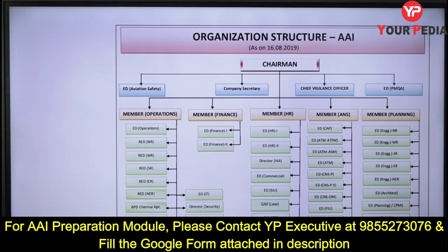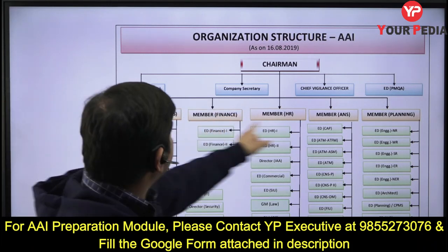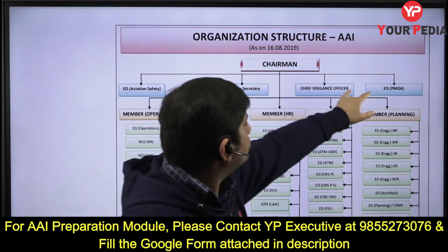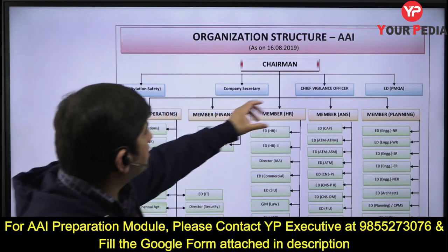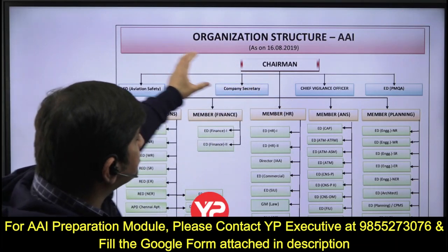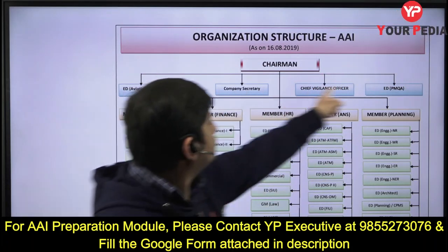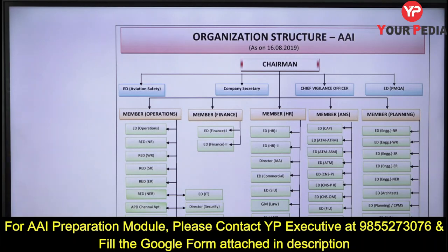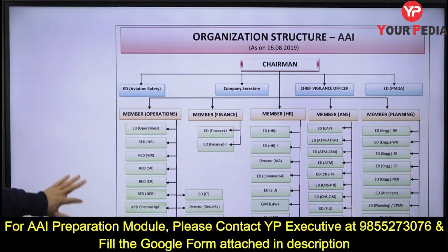Then there are Members, and you can see from the hierarchy arrows that Members are directly under Chairman. These posts are also under Chairman, but you cannot say that the Chief Vigilance Officer has Members under him — these are separate verticals. You need to understand how this hierarchy goes, and I will discuss what kind of questions will come.